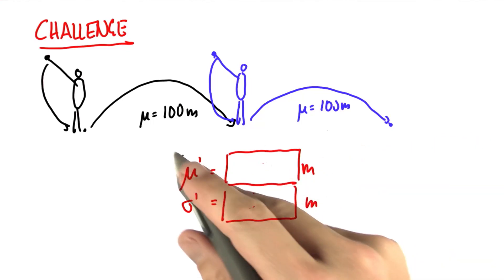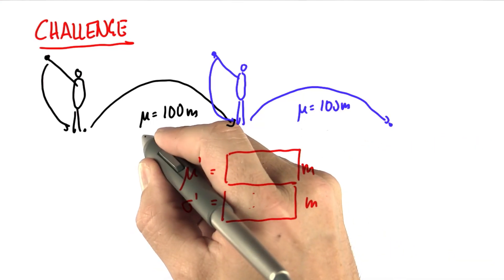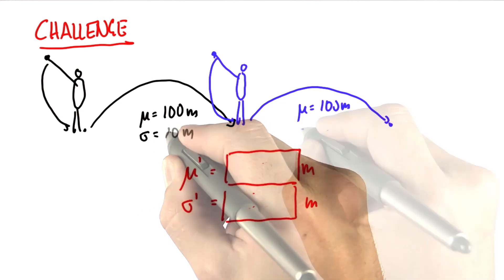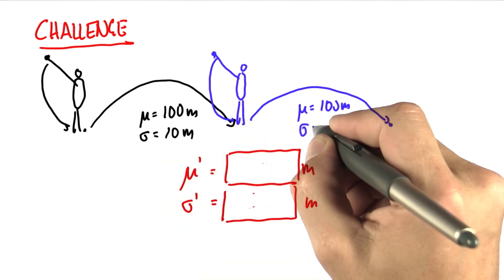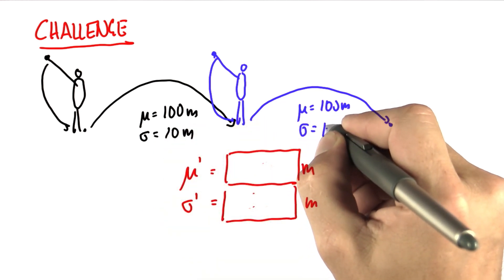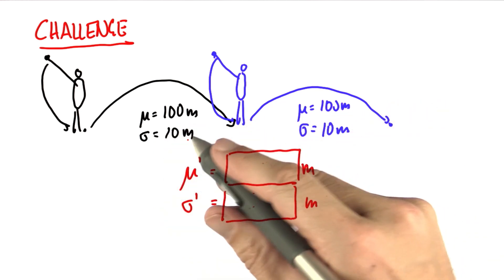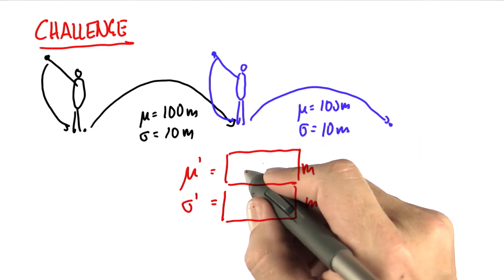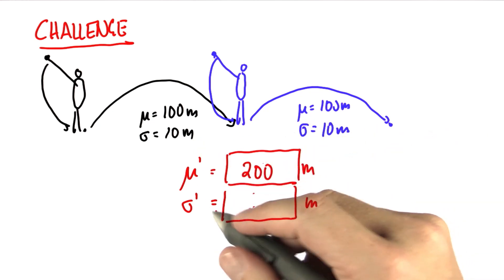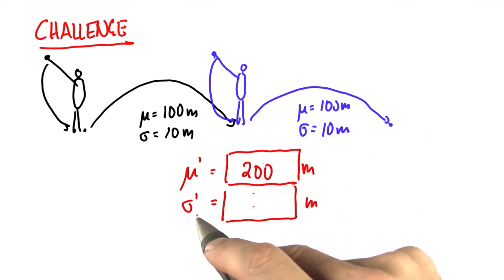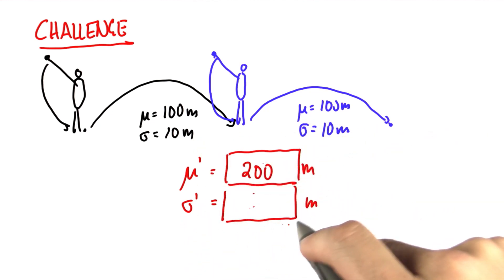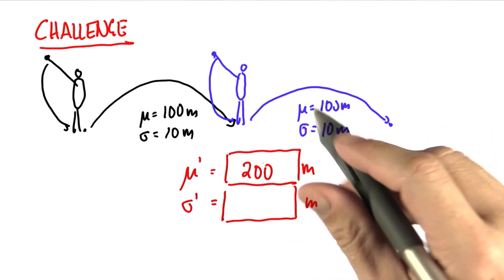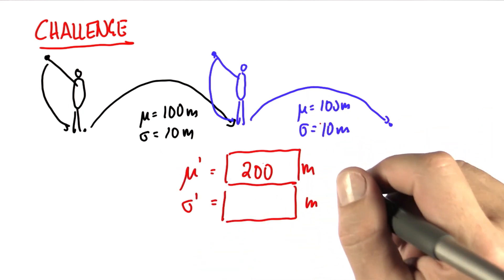Let me modify my question and express things in terms of standard deviations, not variances. Each of those has a standard deviation of 10 meters. We already know that the combined mu will be 200 meters. But what about the new standard deviation? You can actually calculate this — give me at least an approximate answer.